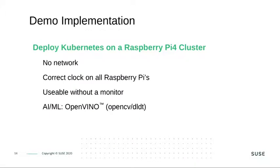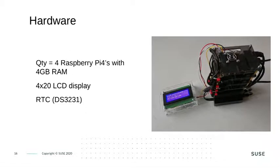The communication with the frontend is done via gRPC, which allows encrypted communication with certificates and role-based access control. We will use Raspberry Pi for the cluster and deploy Kubernetes on it. We don't need external network, but we will have a correct clock on all Raspberry Pis so that the certificates from Kubernetes work. It is usable even without a monitor.